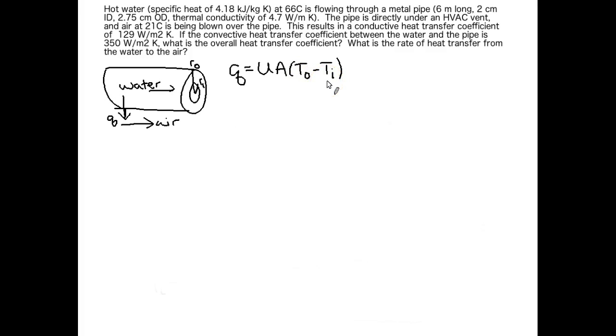We have our area term A, and notice that I wrote TO minus TI. Why did I write them in this particular order? Well, we're asked for the rate of heat transfer from the water to the air. Since the water is at a higher temperature than the air, that means the water is giving heat to the air. And since the water is giving heat or losing heat, Q should be negative.